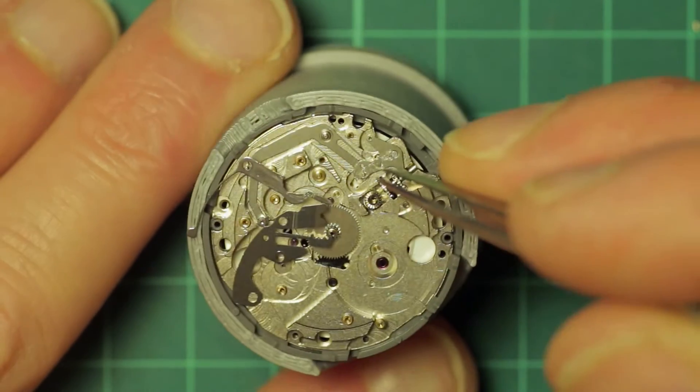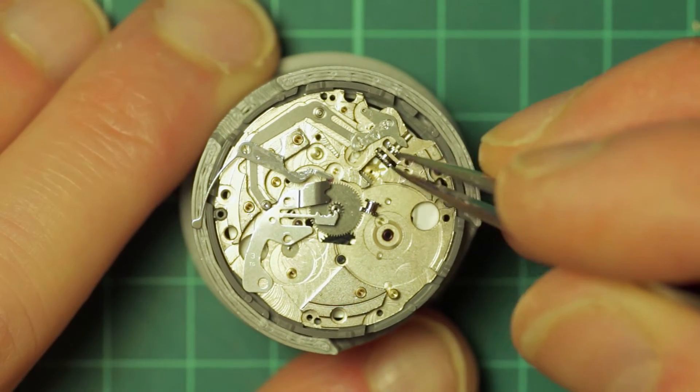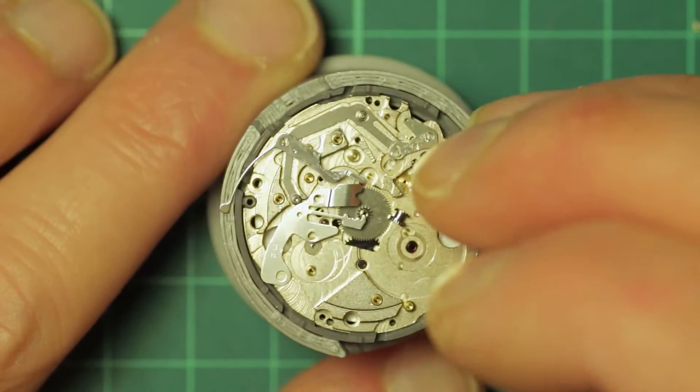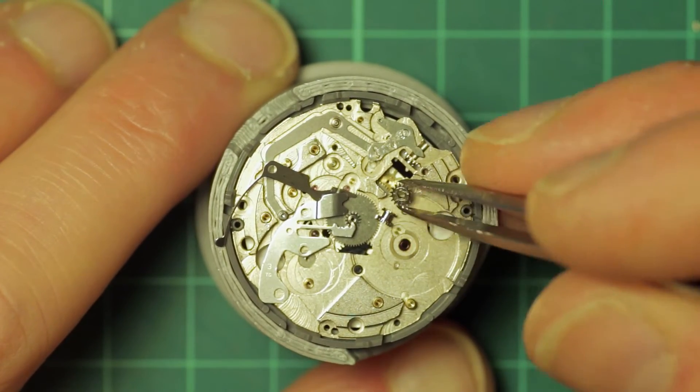The setting lever spring, the yoke with its combined spring, the clutch and the winding pinion, and then the setting lever are removed.